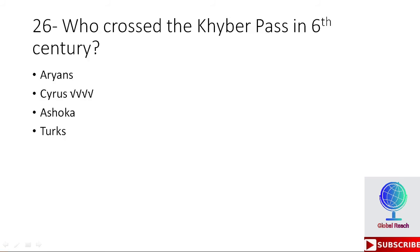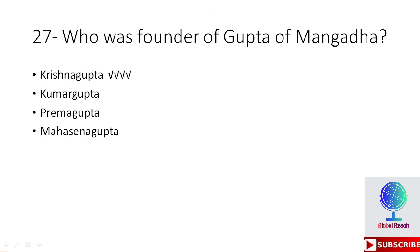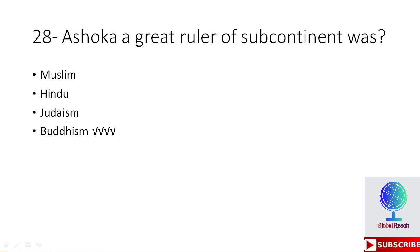MCQ 26: Who crossed the Khyber Pass in the 6th century — Aryans, Cyrus, Ashoka, or Turks? The right option is Cyrus. Cyrus crossed the Khyber Pass in the 6th century. MCQ 27: Who was the founder of Gupta of Mangat — Krishna Gupta, Kumar Gupta, Prema Gupta, or Mahasena Gupta? The right option is Krishna Gupta. Krishna Gupta was the founder of Gupta of Mangat.